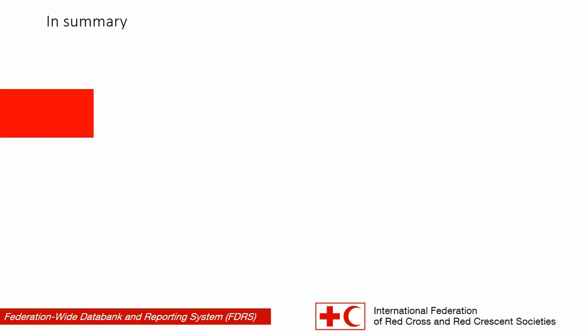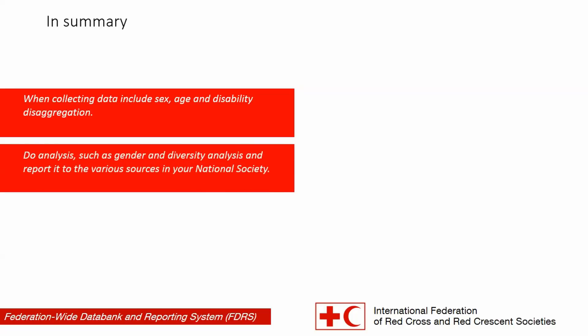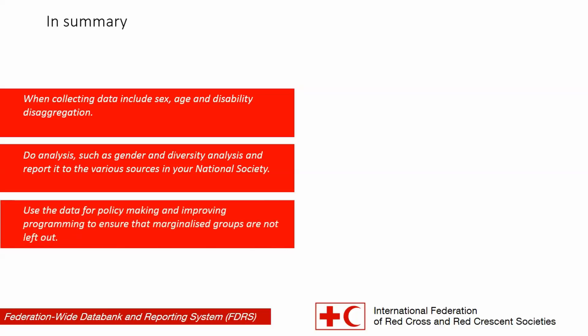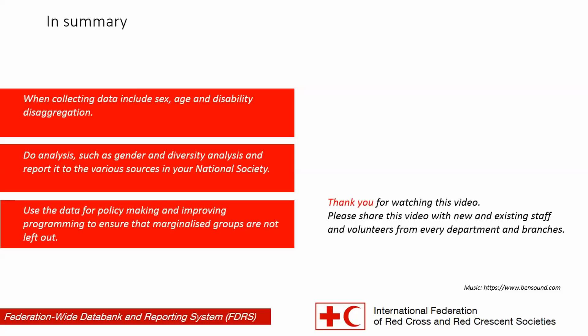In summary, when collecting data include sex, age, and disability disaggregation. Do analysis such as gender and diversity analysis and report it to the various sources in your national society. Use the data for policy making and improving programming to ensure that marginalized groups are not left out. Thank you for watching this video. Please share this video with new and existing staff and volunteers from every department and branch.